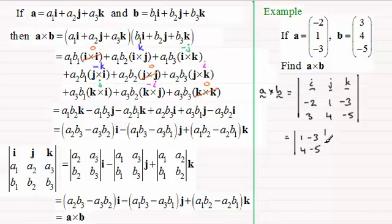So let's just put that up here we've got 1 minus 3, 4 minus 5 and that's multiplied with i. Then we do negative and we're going to multiply j with the determinant minus 2 minus 3, 3 minus 5. And then we've got to add to that the determinant that we multiply with k and that's going to be minus 2, 1, 3, 4.